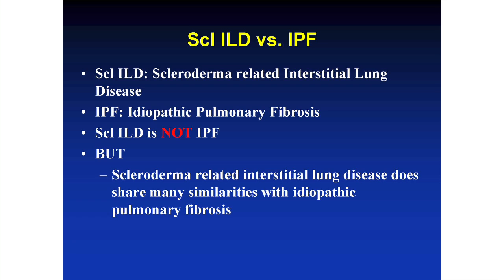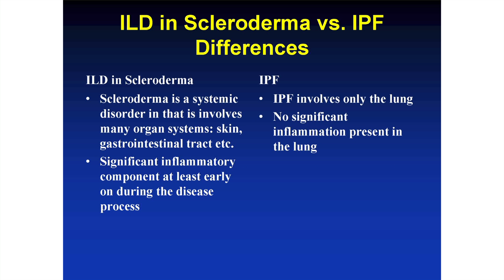Comparing scleroderma-associated interstitial lung disease and idiopathic pulmonary fibrosis: I want to make clear that these are very two distinct disorders. Scleroderma affects multiple organ systems — skin, gastrointestinal tract all the way from the esophagus to the anus — whereas idiopathic pulmonary fibrosis affects only the lung. Scleroderma-associated interstitial lung disease has two separate components: the inflammatory component — think of it as red, irritable tissue — and scarring or fibrosis.